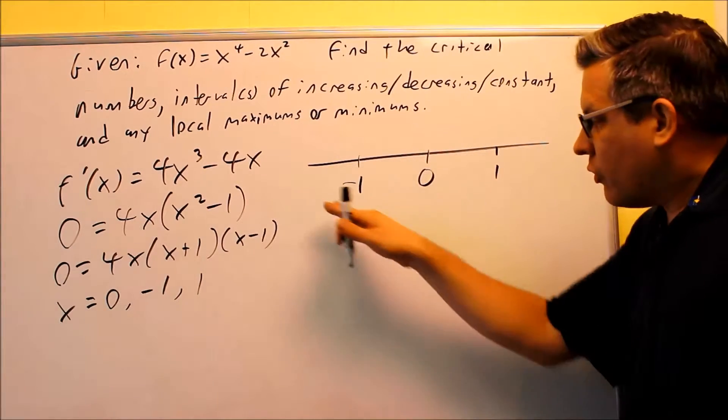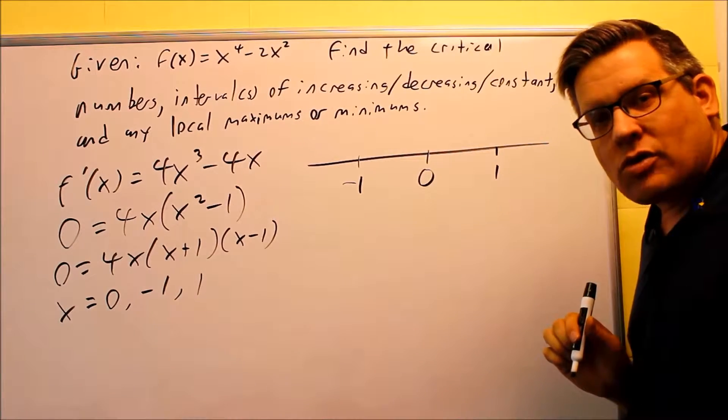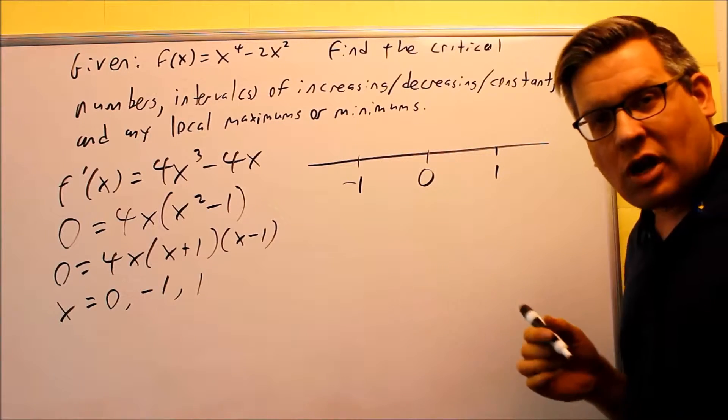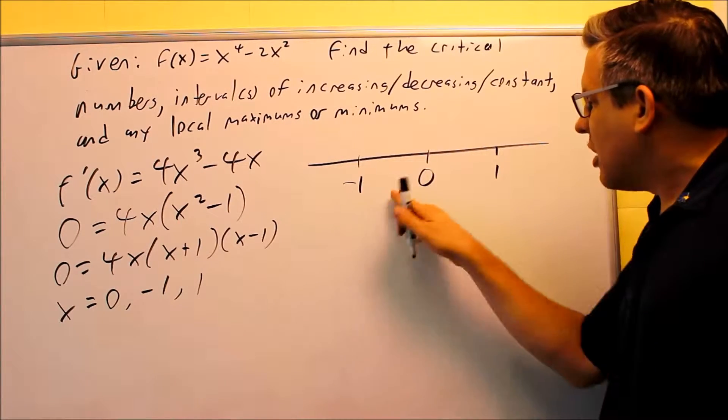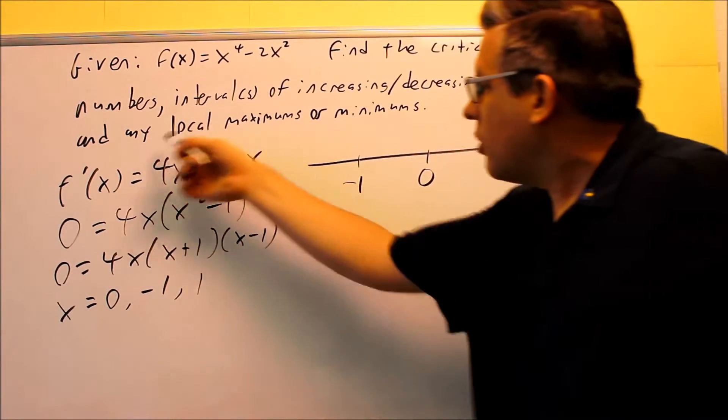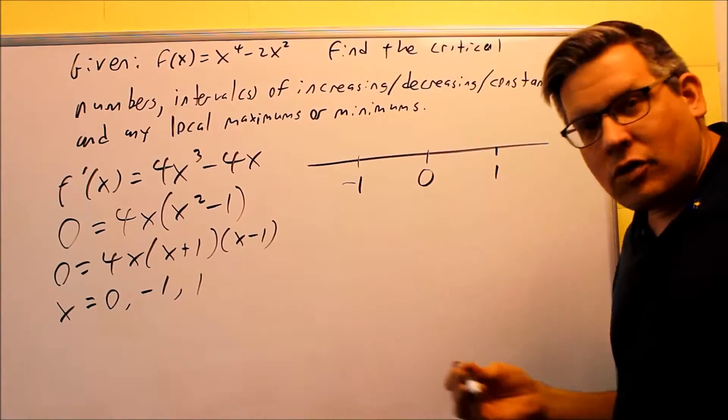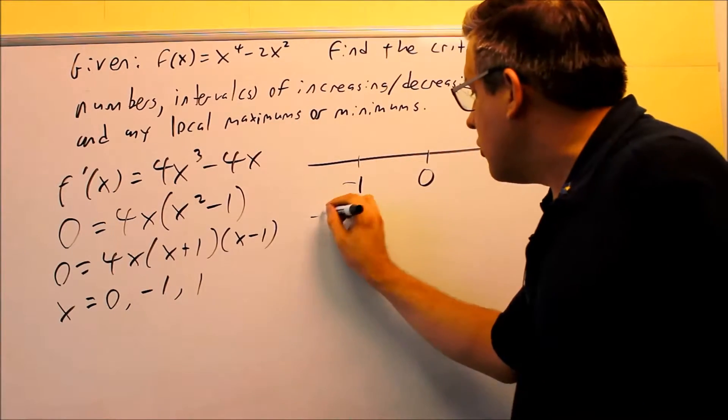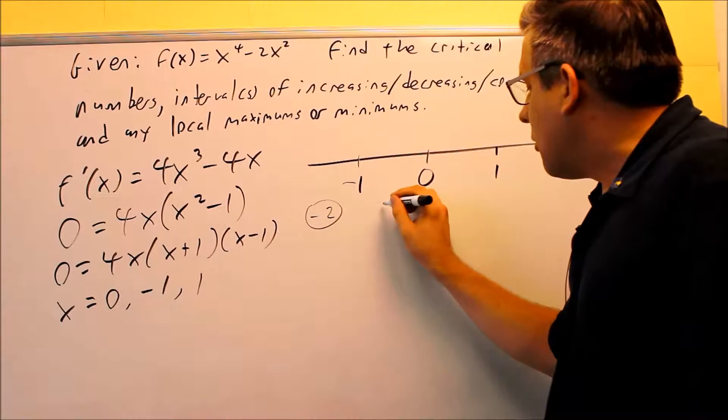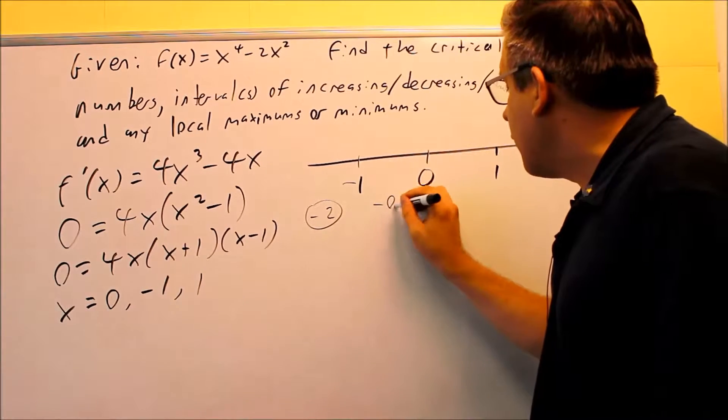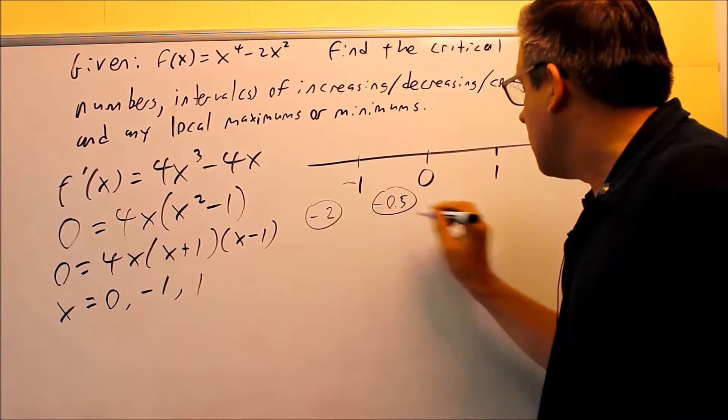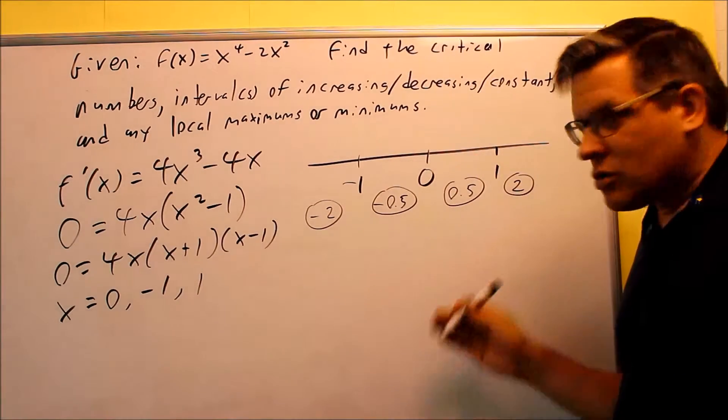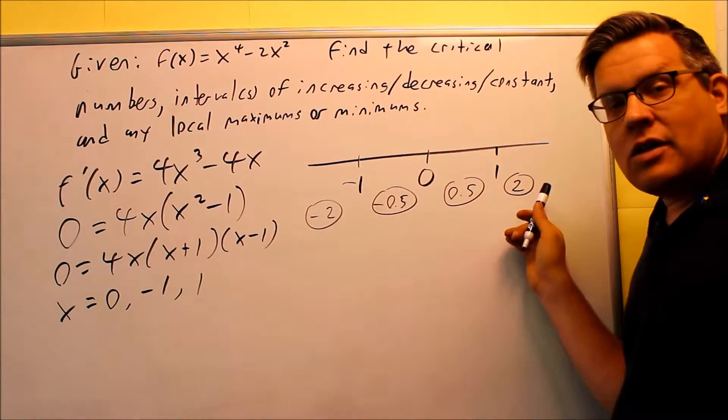Because the results of this is going to tell us whether it's increasing or decreasing. If the derivative is positive, that means it's increasing, negative is decreasing, zero is constant. So we're going to test numbers in these intervals, but we're going to put them into the derivative function. So I'm going to indicate here my test values, I'm going to circle them, so I'm going to do negative two, I'm going to test negative 0.5 for this one, 0.5, and I'll use two.